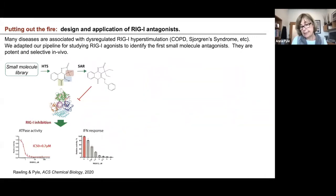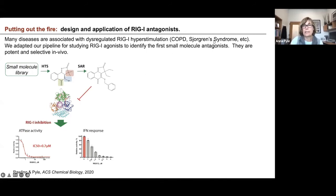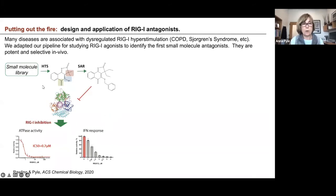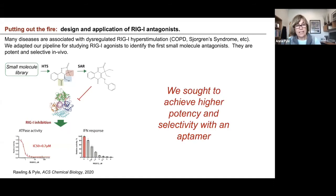It's great to turn on RIG-I, and it has many important applications, but it's also sometimes important to turn it off, because if hyperactivated, it can release too many interferons and too much of a cytokine response. Many diseases are associated with dysregulated stimulation, like COPD and Sjogren's syndrome. So we have created pipelines for finding antagonists that build on our pipelines for finding agonists. In a paper published relatively recently, we showed that through small molecule screening and SAR, you can develop reasonably potent inhibitors of RIG-I that are active in cells. But the potency is not fantastic, and specificity is a concern, so we sought to achieve higher potency and selectivity with an aptamer.